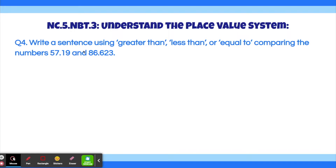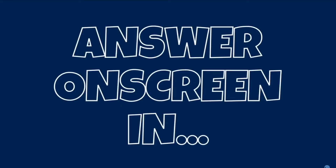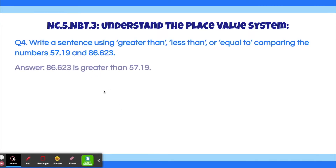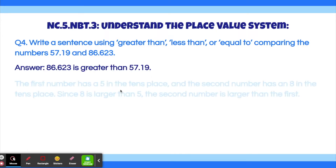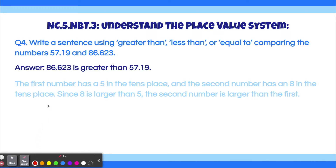Question 4. Write a sentence using greater than, less than, or equal to comparing these two numbers: 57.19 and 86.623. I'll give you guys a few seconds to solve this problem. The answer is: 86.623 is greater than 57.19. The first number has a five in the tens place and the second number has an eight in the tens place. Since eight is larger than five, we can use the words 'greater than' to solve this question.